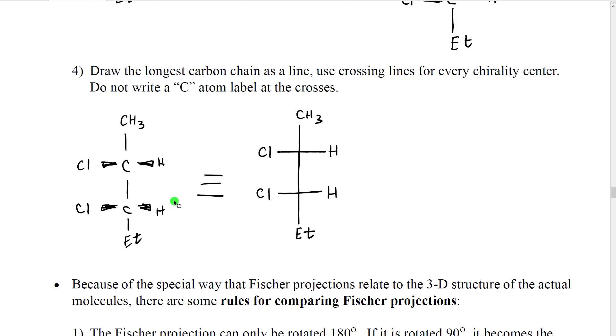We then redraw the molecule with the longest carbon chain as just a line and each chirality center being a cross across the two bonds, so we form for this chirality center a cross on the parent chain line, on this chirality center a cross on the parent chain line, and we omit the carbon atoms at the chirality centers.